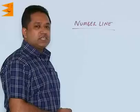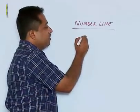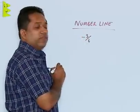Now, we are going to plot some negative rational numbers on the number line. Let us say we have to plot minus 3 by 6 on the number line.